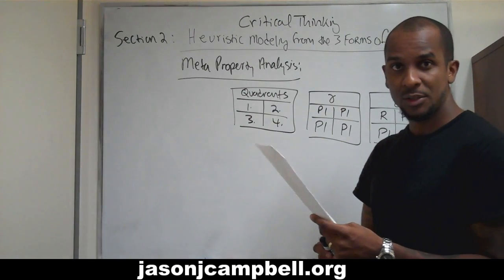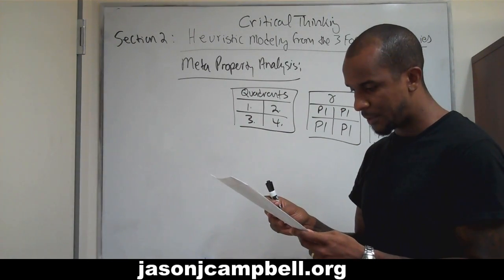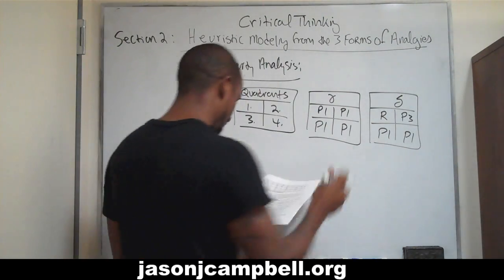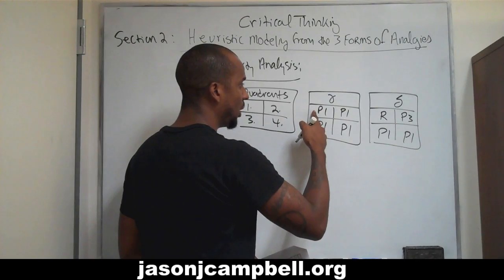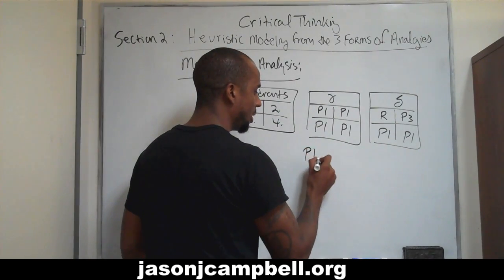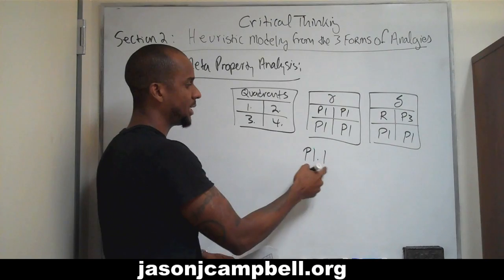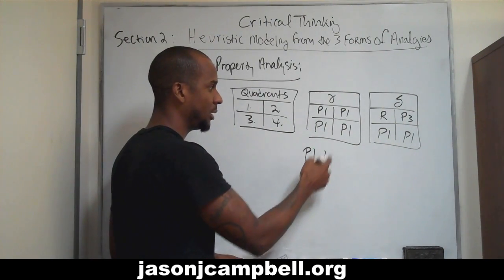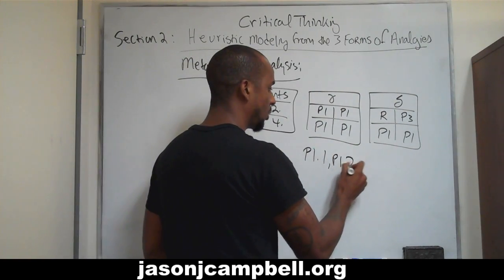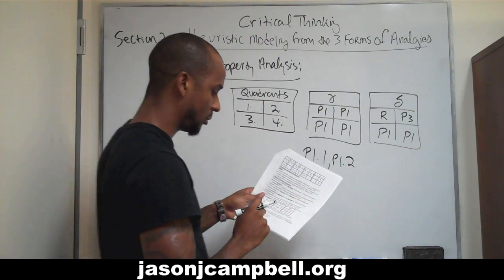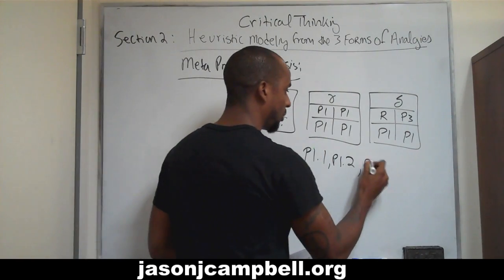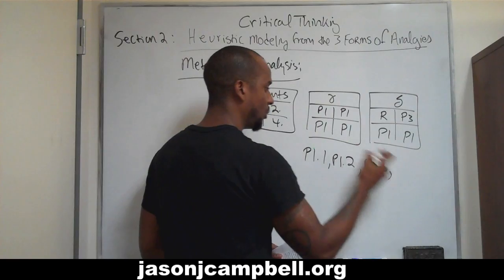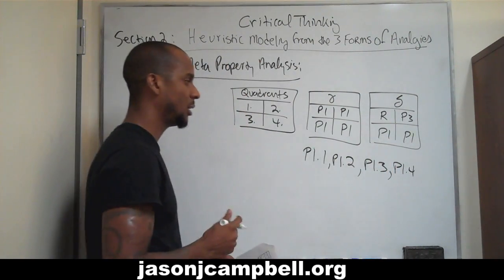Let's look at gamma so we really have an understanding of what's going on. Gamma's here. If I was to describe this relationship in gamma, I would say that P1 is in position P1.1 — property 1 is in quadrant 1. Property 1 is in quadrant 2: P1.2. Property 1 is in quadrant 3: P1.3. Property 1 is in quadrant 4: P1.4.